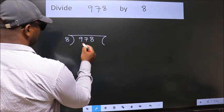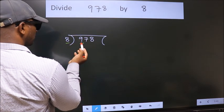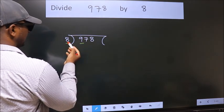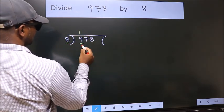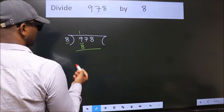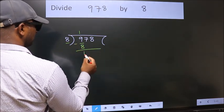Here we have 9, here 8. A number close to 9 in the 8 table is 8 times 1 equals 8. Now we should subtract. We get 1.